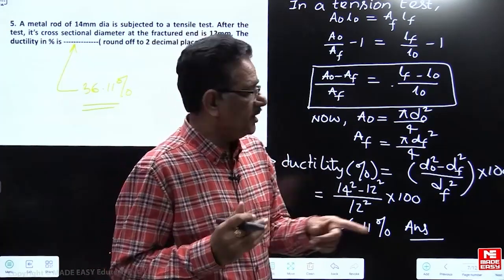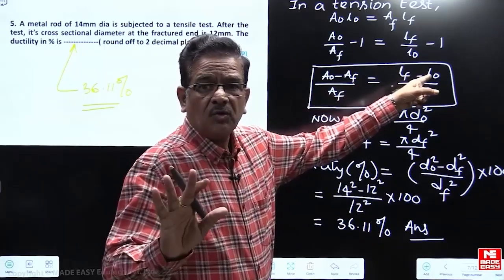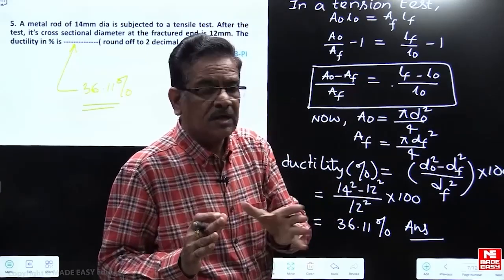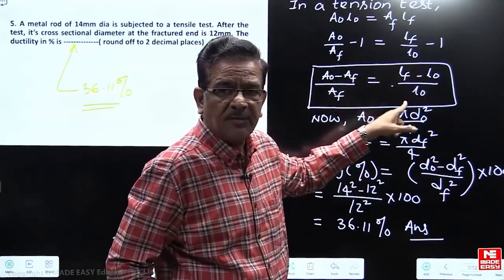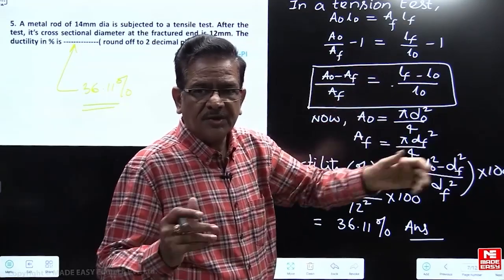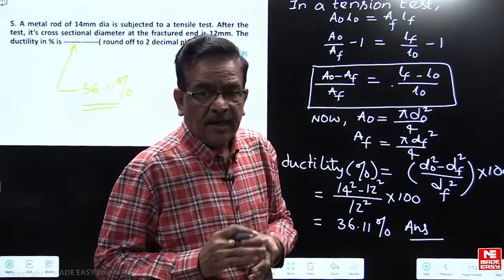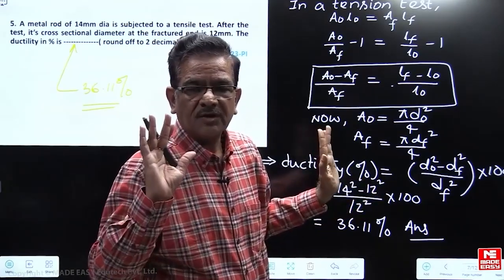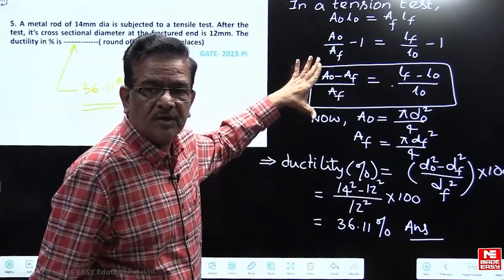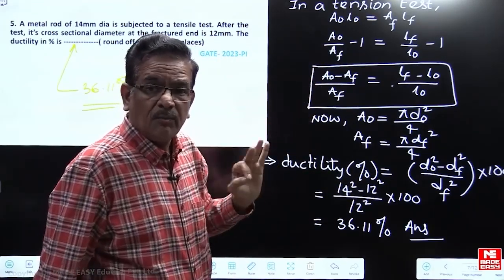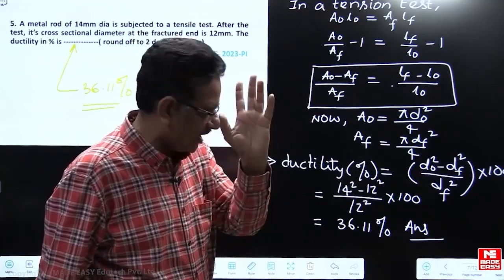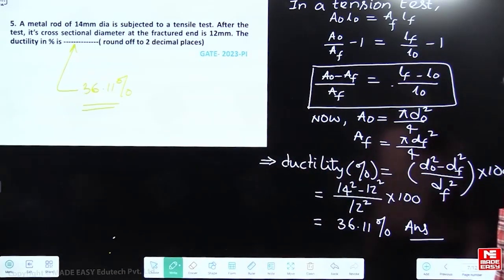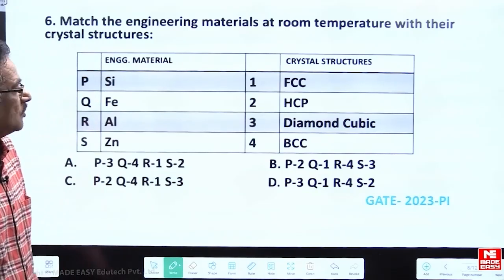Most students get confused here because they know ductility as percentage elongation (L_F minus L₀ divided by L₀ times 100), but when diameter data is given there is little confusion. This can be resolved using the conceptual framework covered in the coaching class. This question was given in GATE 2023 PI paper.